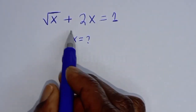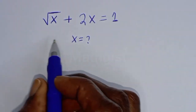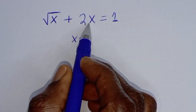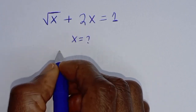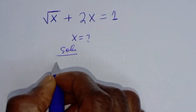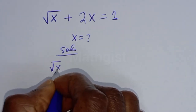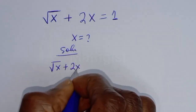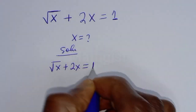Hello, how to solve for s from this given math problem: square root of s plus 2s is equal to 1.